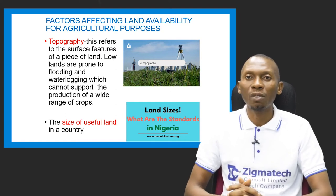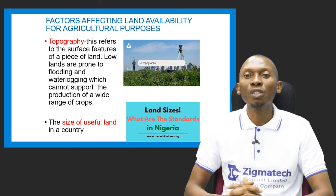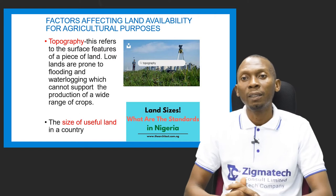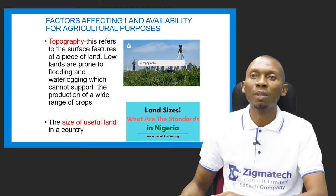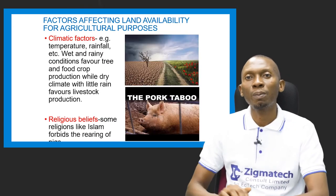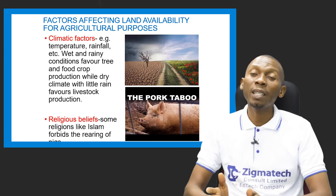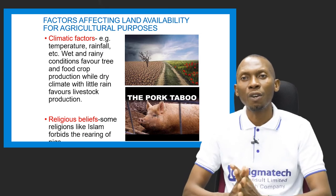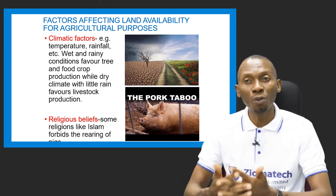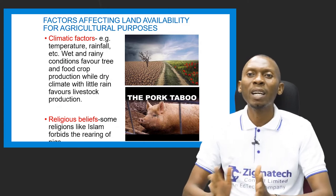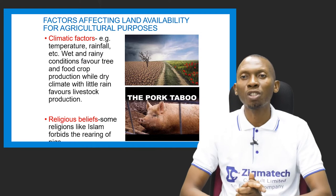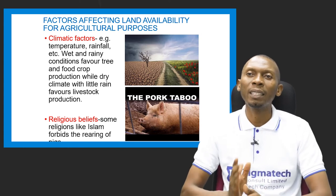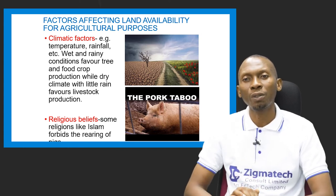The size of useful, cultivable land in a country also determines land availability for agriculture. Climatic factors such as temperature and rainfall affect availability as well — wet and rainy conditions favor food and tree crop production, while a dry climate favors livestock production rather than crops.